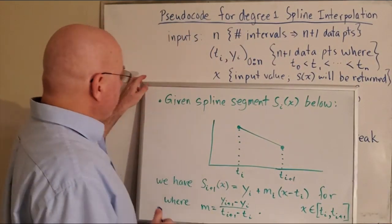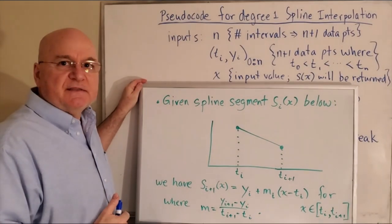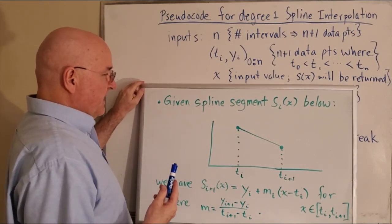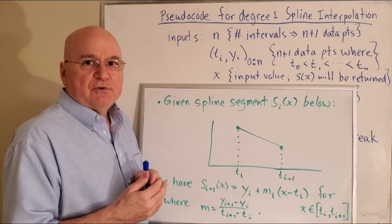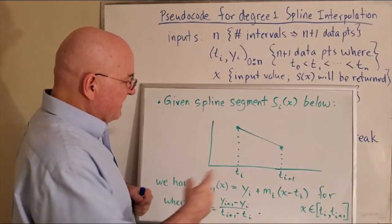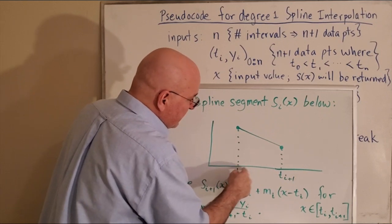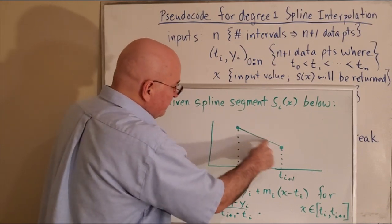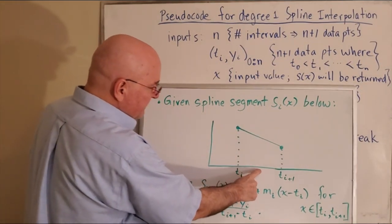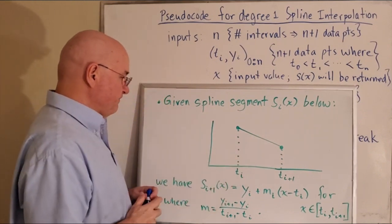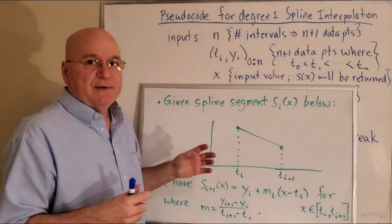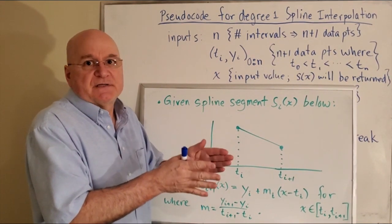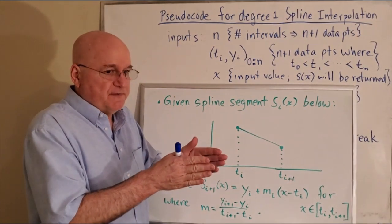Before we get to the pseudocode — we've seen this in the previous video — if you're given one spline segment and the input value you're looking for is between two known x values, you use the spline, which is a line segment, to compute the y value. So the first thing we have to do in the pseudocode is find out which interval x falls into, and then use that portion of the spline function to compute the estimate of the y value.